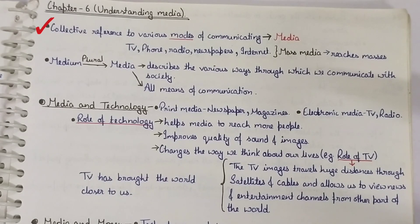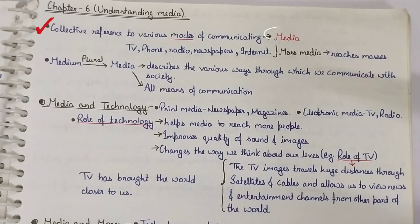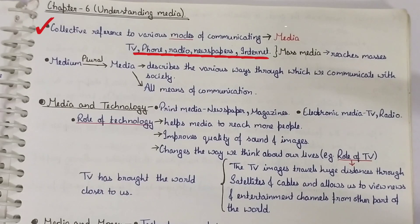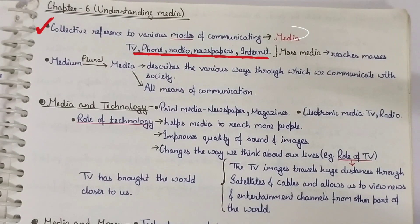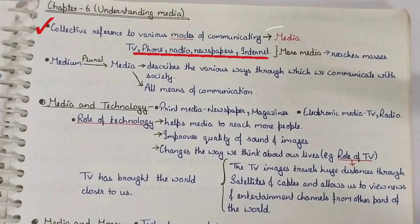When there are modes of communication, only one word is used — media. Like TV, phone, newspaper, and internet — these are our modes of communication through which we can reach other people. Besides radio, TV, newspaper, and internet, we call them mass media because through them we can reach a large number of people. That's why we call them mass media.